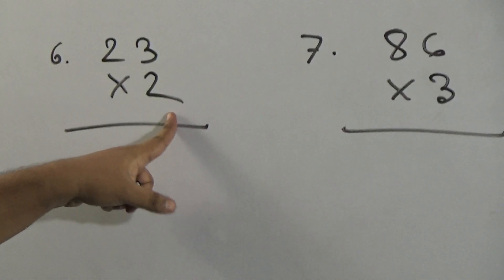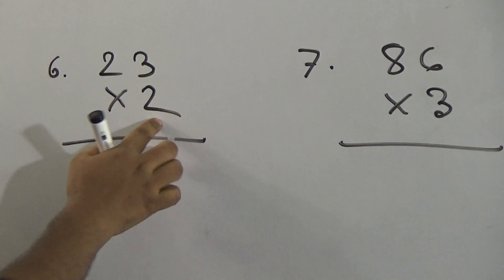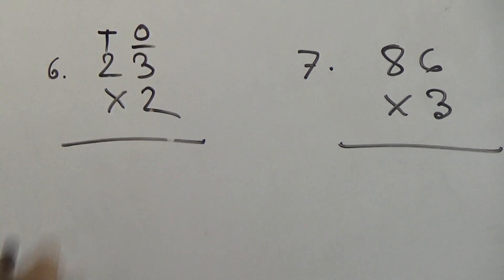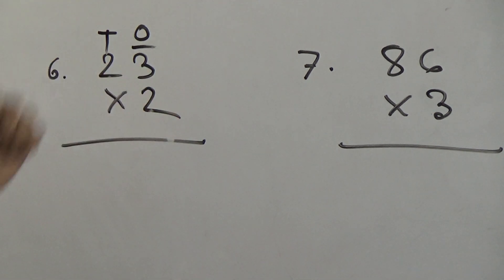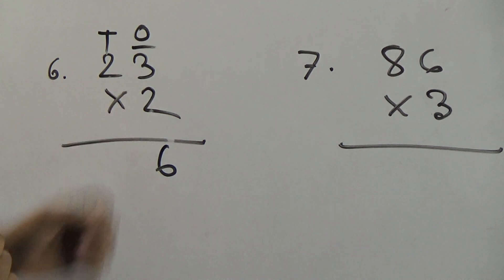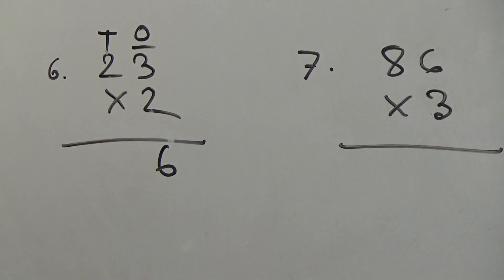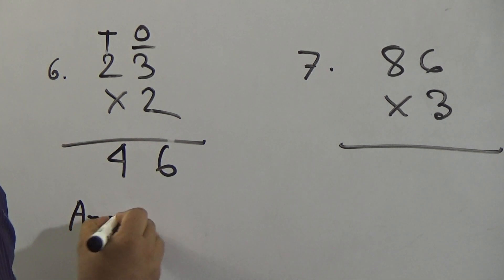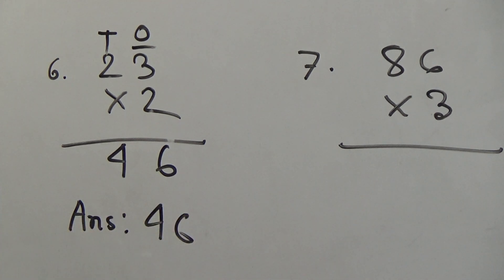Next question: 32 multiplied by 2. Here 2 is in the ones place and 3 is in the tens place. Counting times table 2: 2 ones are 2, 2 twos are 4, 2 threes are 6. So 6 is written here. Now we multiply this 2 with 2: 2 ones are 2, 2 twos are 4. There is no carrying, so we write 4 here. The answer is 64. Dear student, don't forget to write the answer after completing your solution.